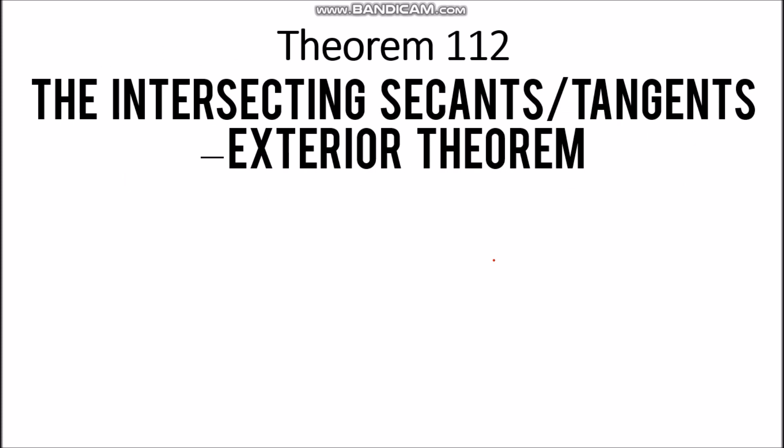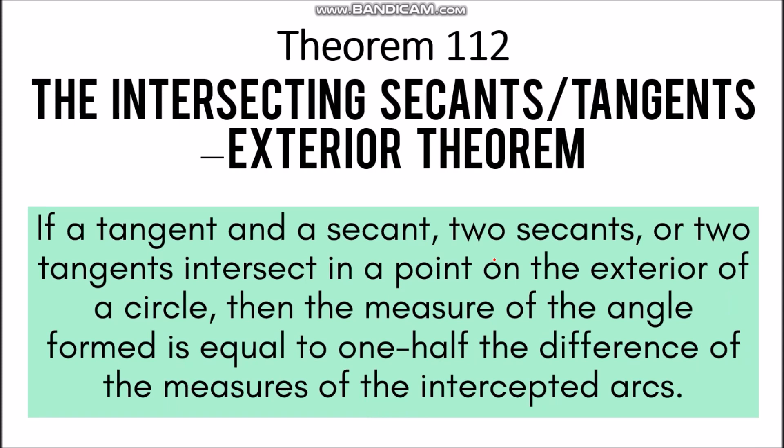The first theorem is Theorem 112, the Intersecting Secants or Tangents Exterior Theorem. If a tangent and a secant, two secants, or two tangents intersect at a point on the exterior of a circle, then the measure of the angle formed is equal to one-half the difference of the measures of the intercepted arcs. There are three cases: a tangent and a secant, two secants, and two tangents.